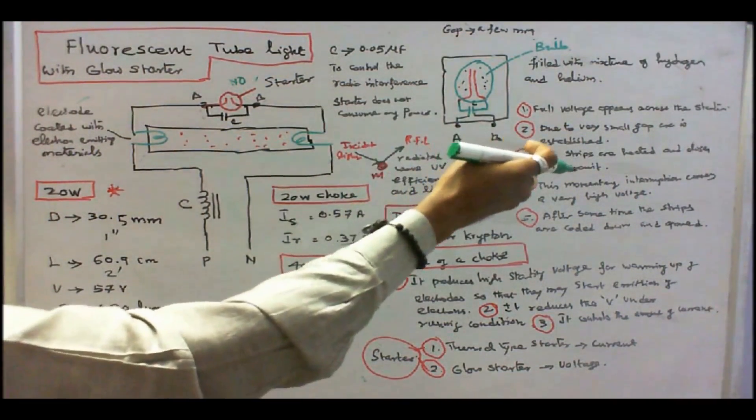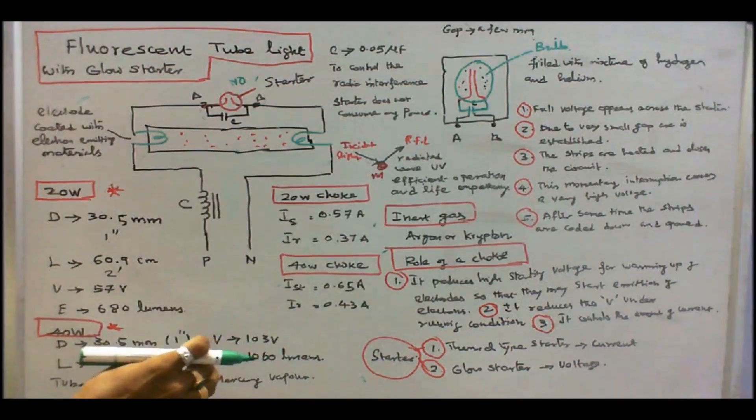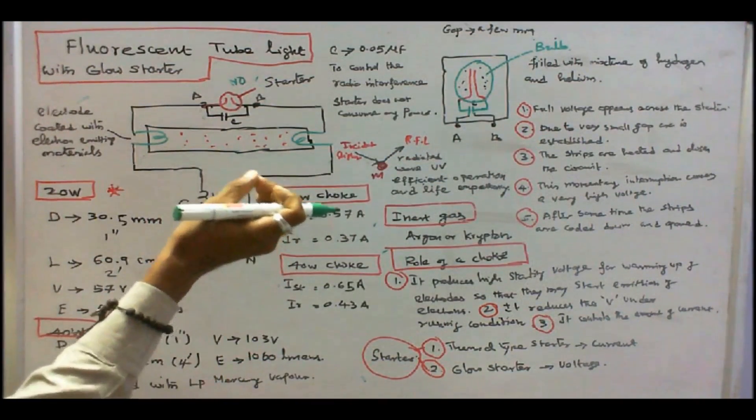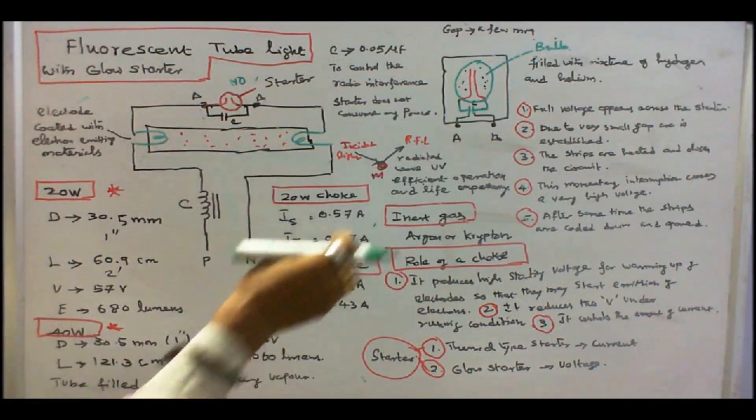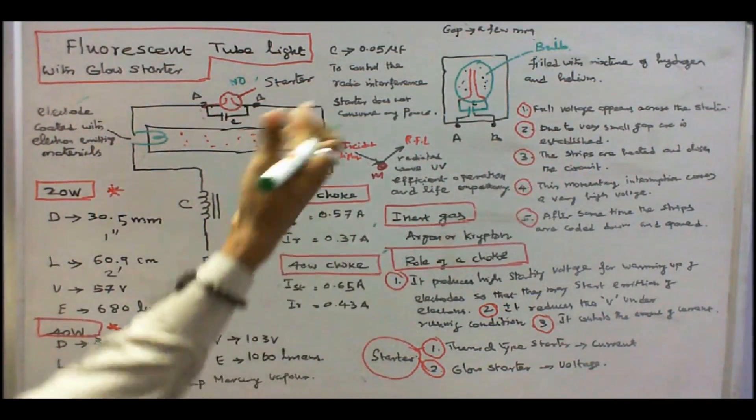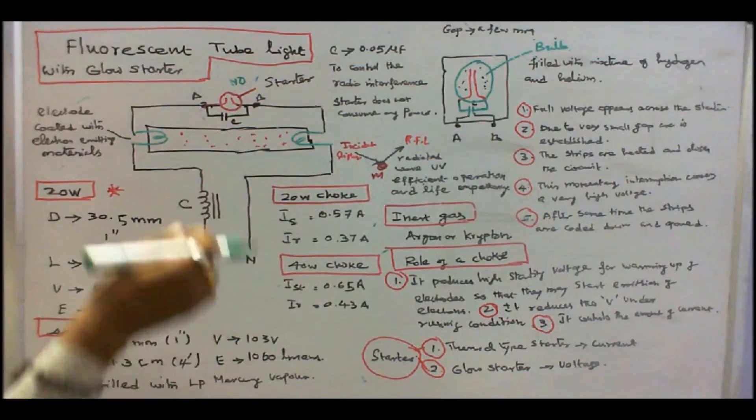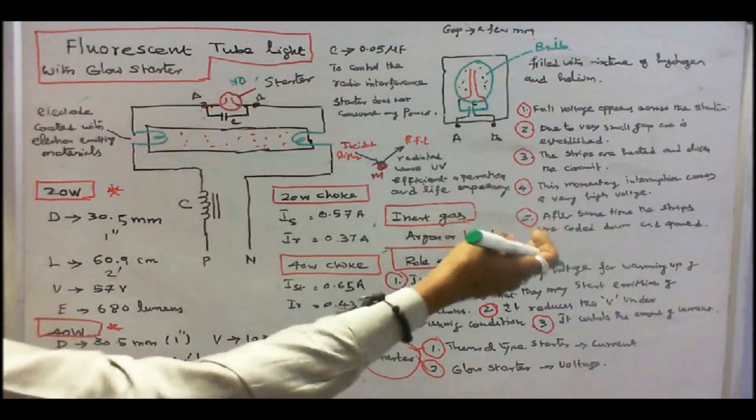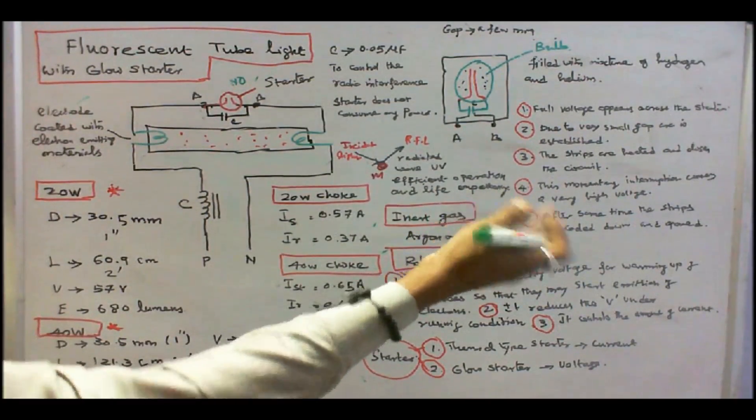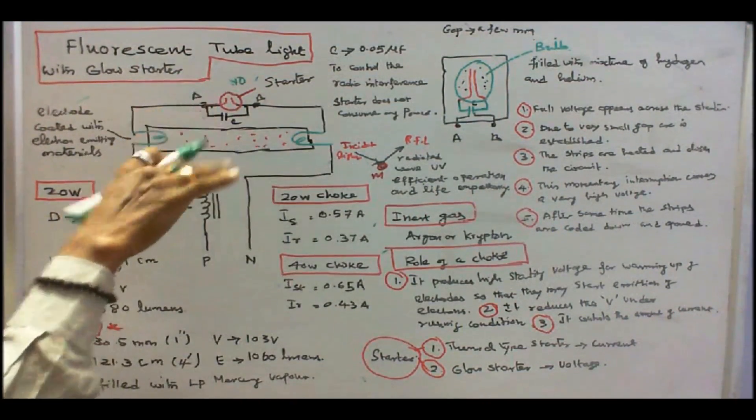The strips are heated and close the circuit. At one stage, it will heated up. Immediately, it will close. Normally open. Now, it will close. This momentary interruption causes a very high voltage. That is the role of a starter. After some time, the strips are cooled out and opened. Again, it will come to a normally open state.